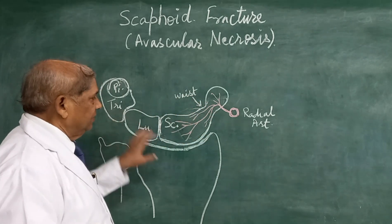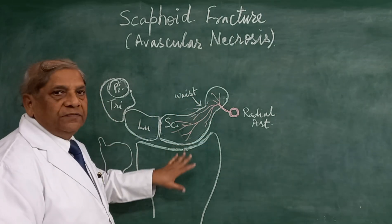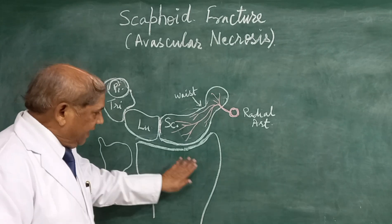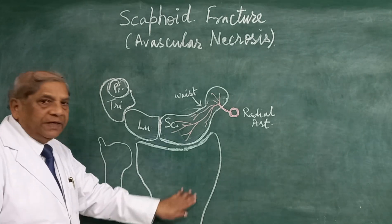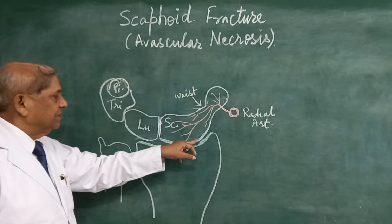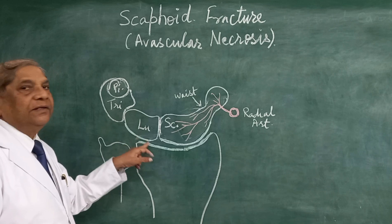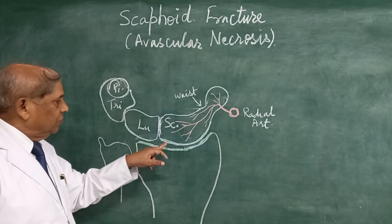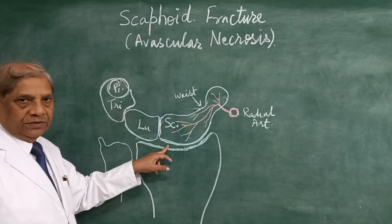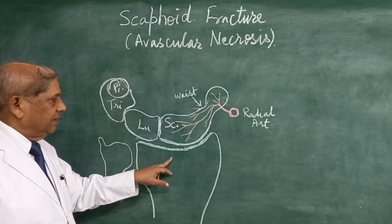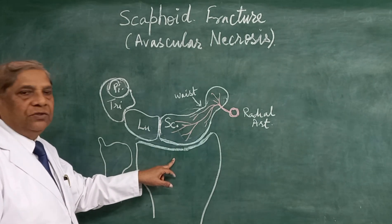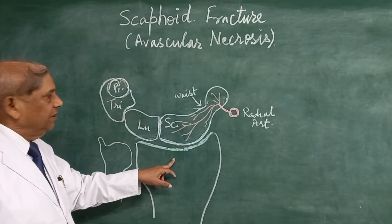If you look at the proximal row, it articulates with the distal end of the radius, which articulates with the scaphoid and lunate to form the wrist joint — the radiocarpal joint.